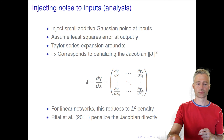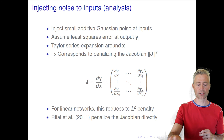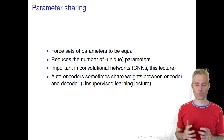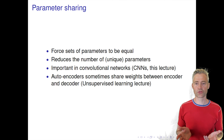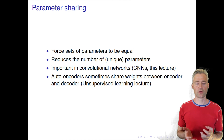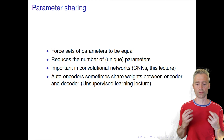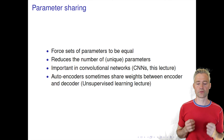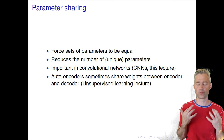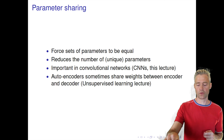Parameter sharing is something we've already seen. When we talk about unsupervised methods next week, convolutional neural networks are of course the prime example of weight sharing.